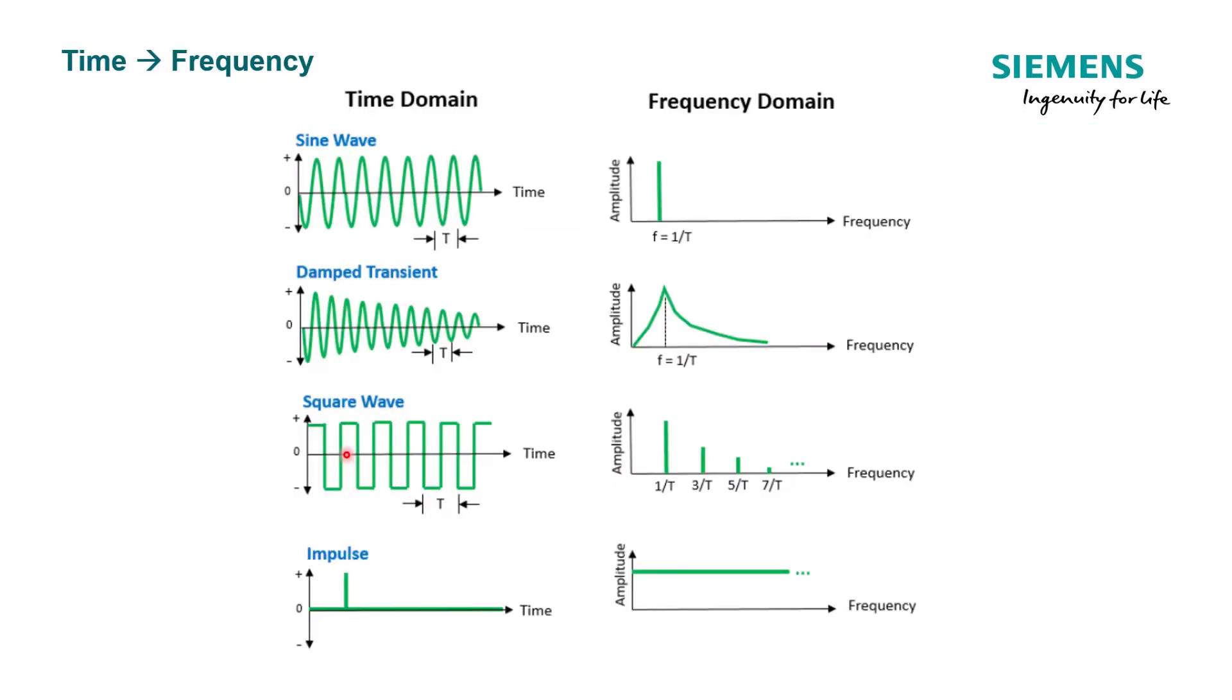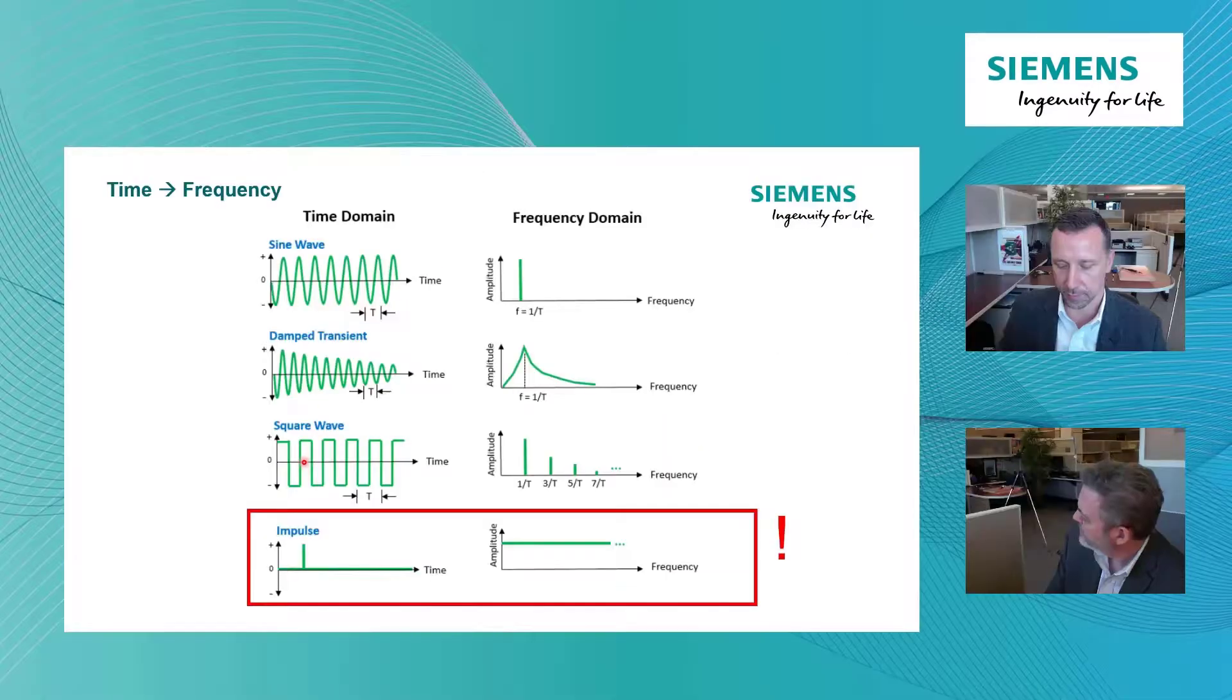And that's kind of highlighted here more on this next slide where we look at some different waveforms. So if I have a sine wave, it's very specific when I perform an FFT to look at that in the frequency domain. It's just one specific frequency at a given amplitude. If I have a damped transient, the waveform in the frequency domain is shown there. Same for a square wave. But what we really want to highlight is that impulse event. So if I have a quick impulse in the time domain, when I look at that same signal in the frequency domain, it's an equal excitation across a broad range of frequency.